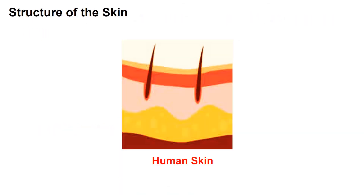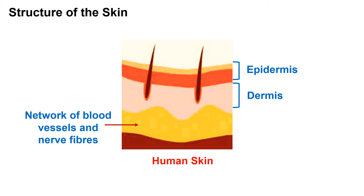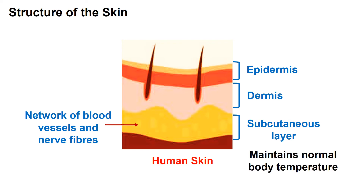Structure of the skin: human skin is made up of two main layers. The outermost layer is called the epidermis, which has various layers. The layer below it is called the dermis. Below the dermis, there is a network of blood vessels and nerve fibers. The subcutaneous layer under this network maintains normal body temperature.